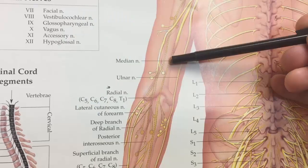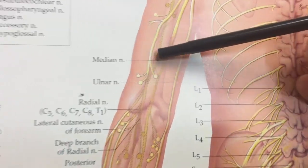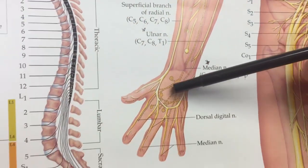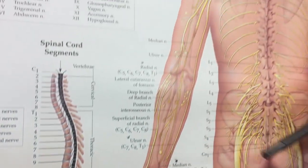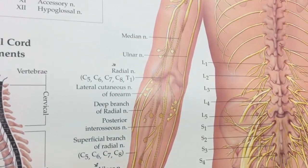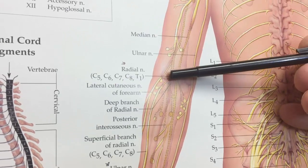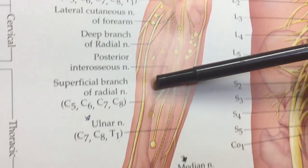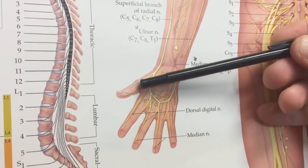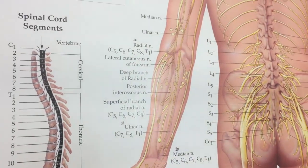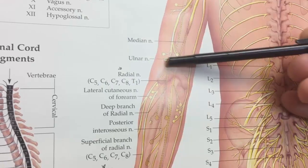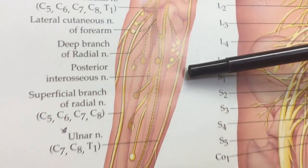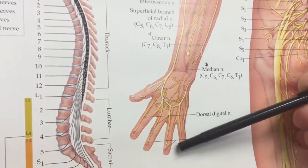There are three main nerve branches in the arm. The median nerve is made up of C5, C6, C7, C8, and T1 nerve roots, and it goes down the center of the arm into the middle fingers and index finger. The radial nerve is also made up of C5, C6, C7, C8, and T1, and its distribution goes mostly to the lateral forearm and into the thumb. The ulnar nerve is made up of C7, C8, and T1, and it goes into the medial inner part of the forearm and into the pinky finger.